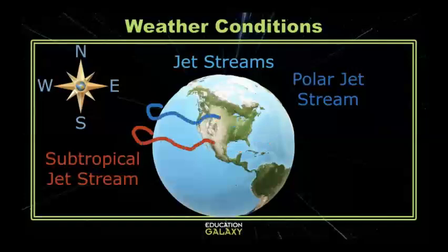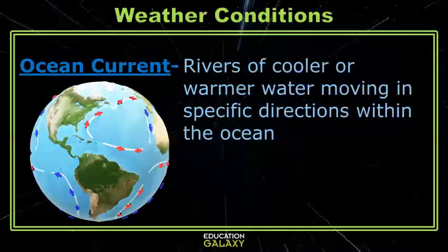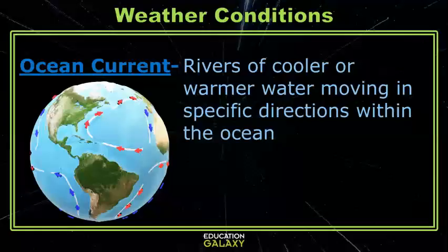In addition to these air currents, ocean currents also have a huge impact on weather and climate. Ocean currents are continuous directed movements of ocean water — basically underwater oceanic rivers. They're caused by wind, ocean temperature, and water salinity.